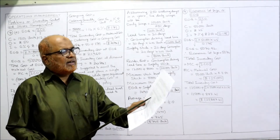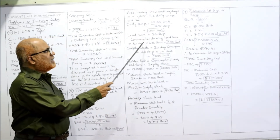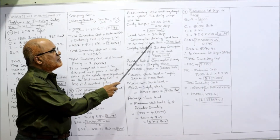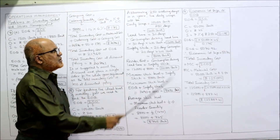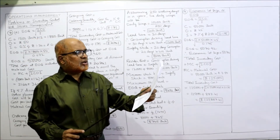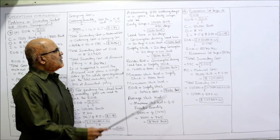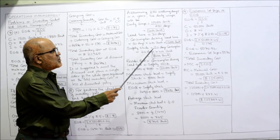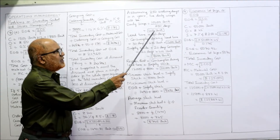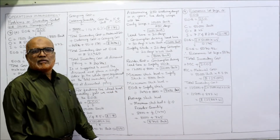Consumption during lead time equals 30 days into 400 units equals 12,000 units. Safety stock is given as 20 days consumption, so safety stock equals 20 days into 400 units per day equals 8,000 units.